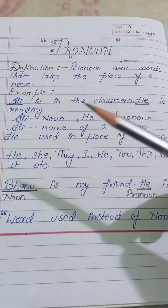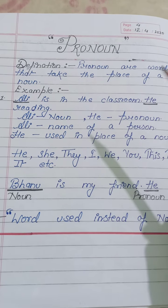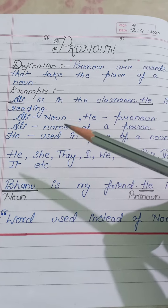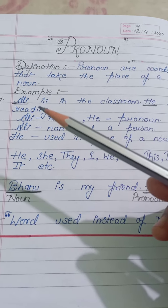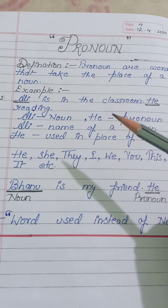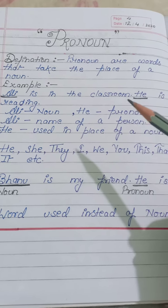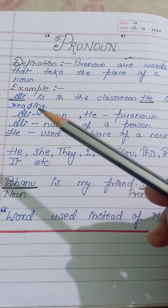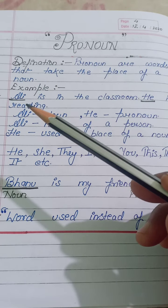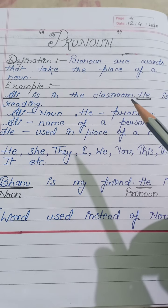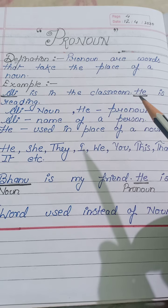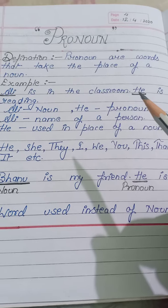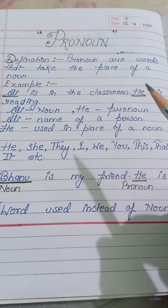See the examples. 'Ali is in the classroom. He is reading.' In the first sentence, the name Ali is used. But in the second sentence, instead of Ali, 'he' is written. So what is 'he' here? It is a pronoun.